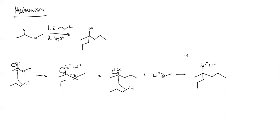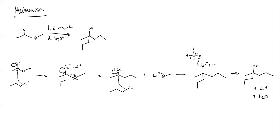Then the very last thing that's going to happen is my acid is going to come in, my H₃O⁺, and it's just going to protonate this oxygen. Then I'm done — I get my OH, I also get lithium, and I also get water. That's my mechanism for an ester going through this. It's exactly the same as before, except instead of a chlorine leaving, this alkoxide group is leaving. That's literally the only difference.